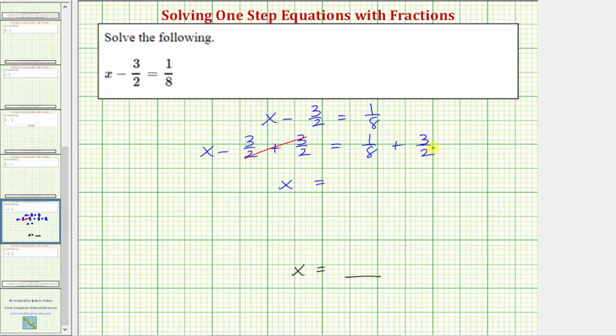In order to add the fractions, we need to obtain a common denominator, hopefully the least common denominator, which would be the least common multiple of 2 and 8. Because 8 is the least common multiple of 2 and 8, 8 is the least common denominator, and therefore we need to write 3 halves as an equivalent fraction with a denominator of 8.